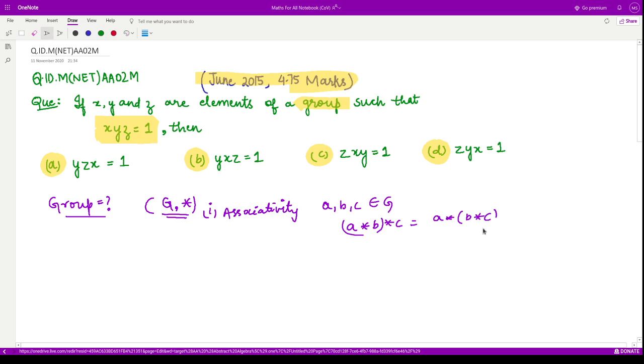The second property is that there exists an identity element, which we call e. That means for every element g belonging to G, when that element is operated with the identity element, it gives back the element itself. Or we can say the identity element when operated with this element g gives back g. This element is known as the identity element.